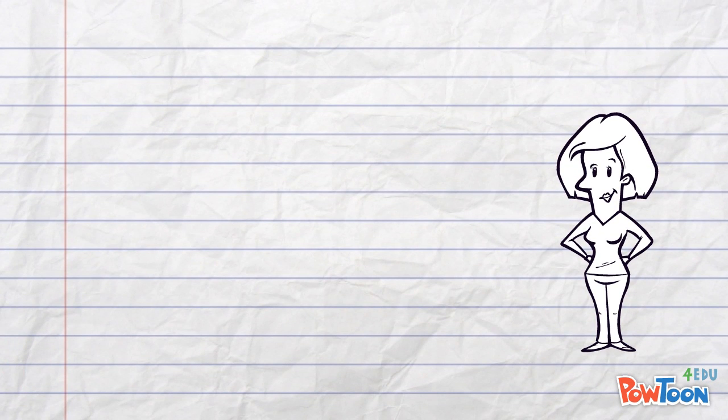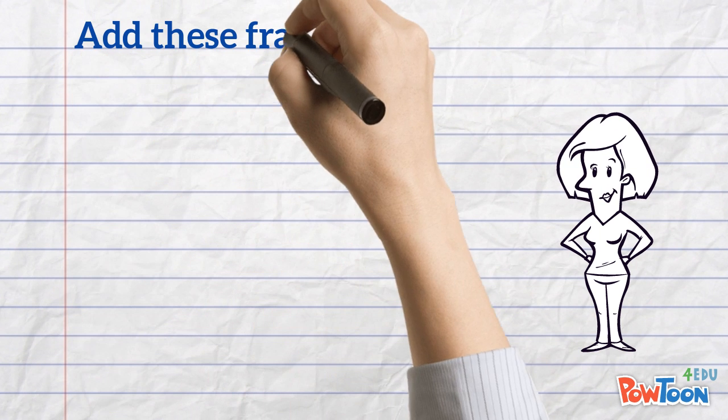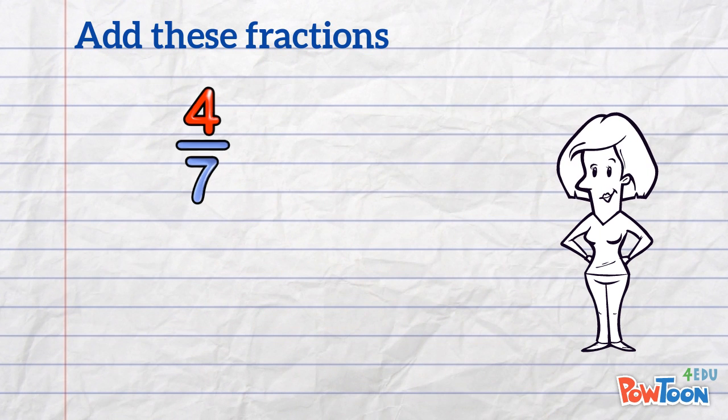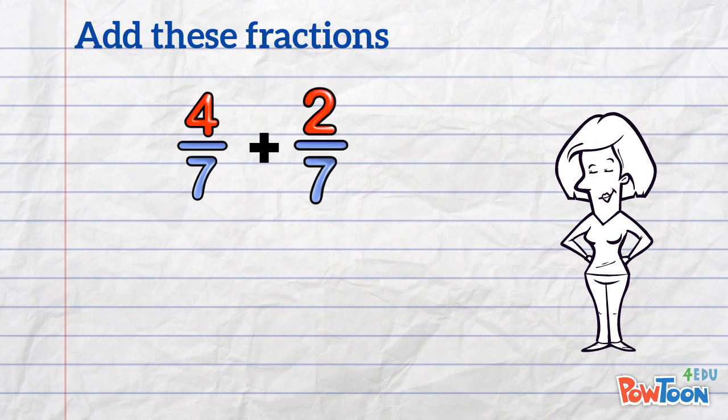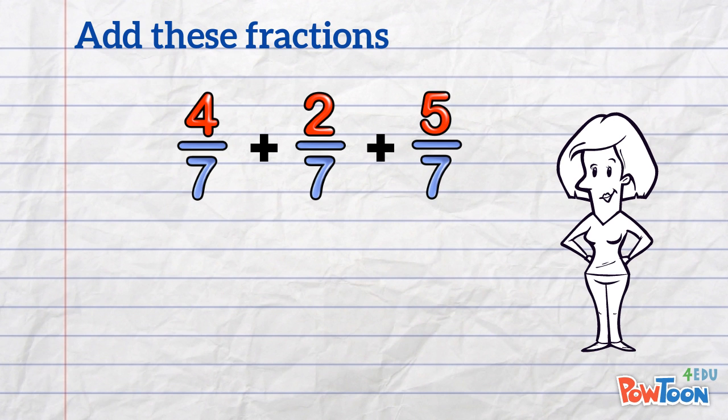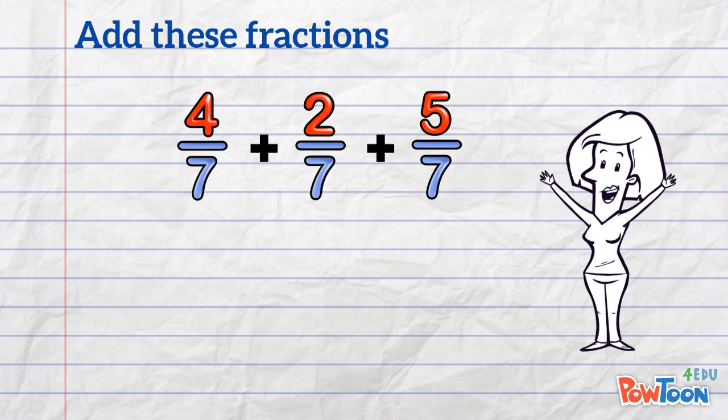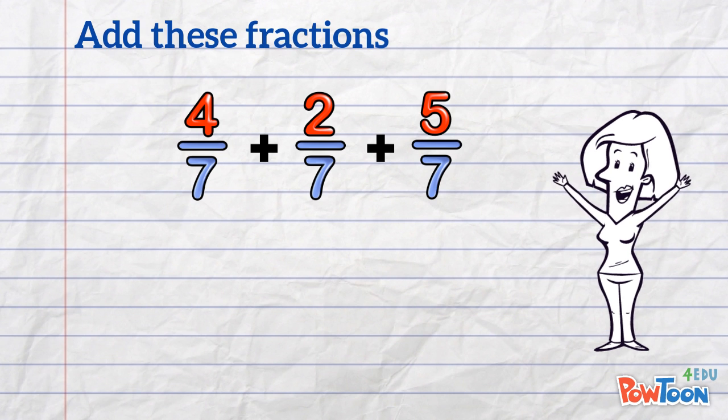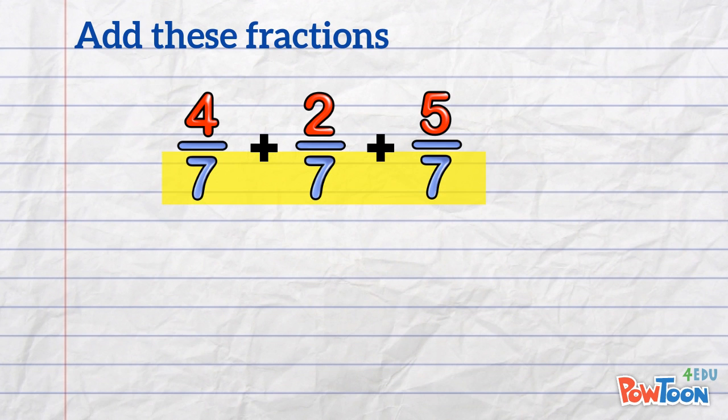And you may be asked to add more than 2 fractions together. Like this! 4 sevenths plus 2 sevenths plus 5 sevenths. Here's a quick way of laying this out so you don't make any mistakes, and I use this myself all the time.